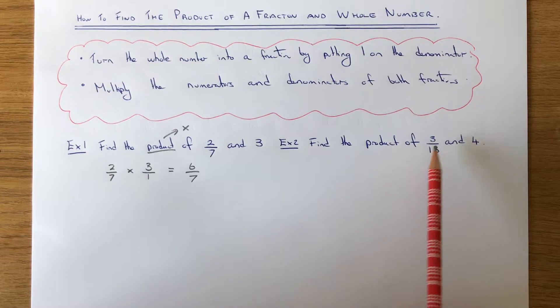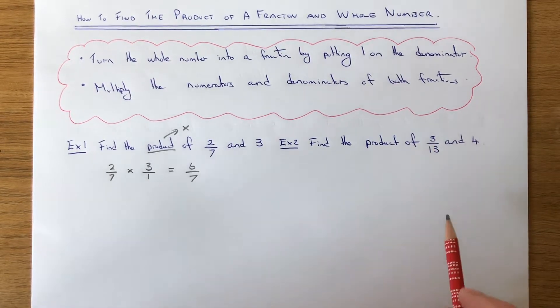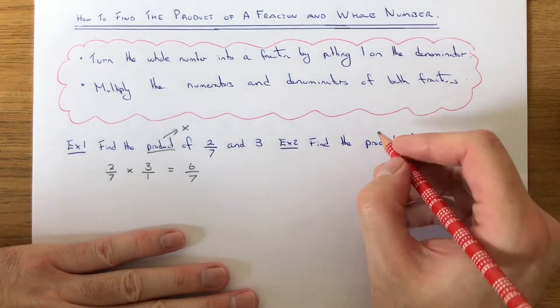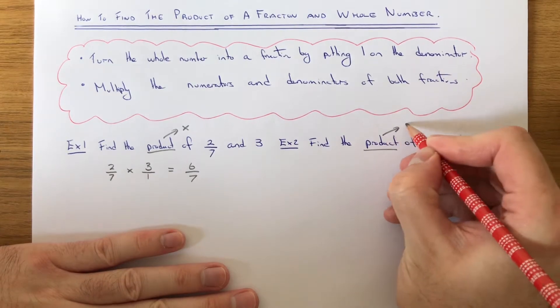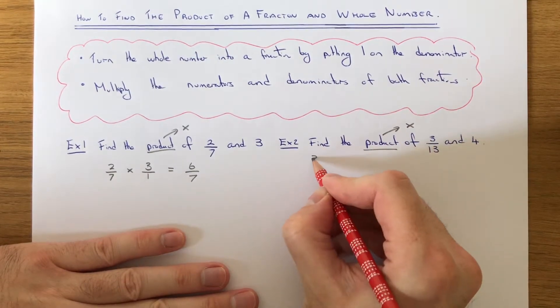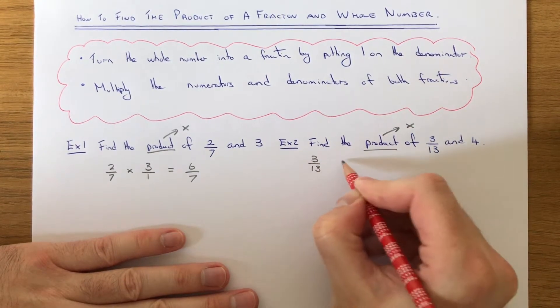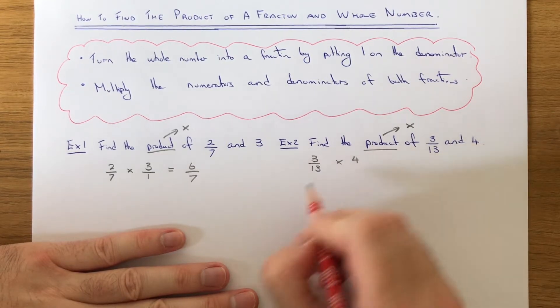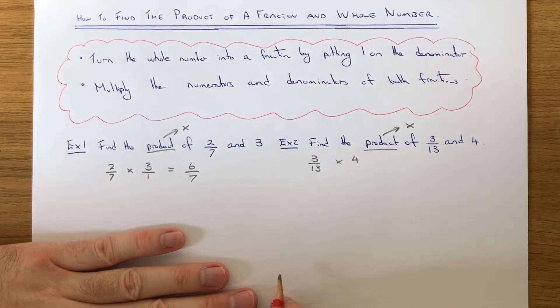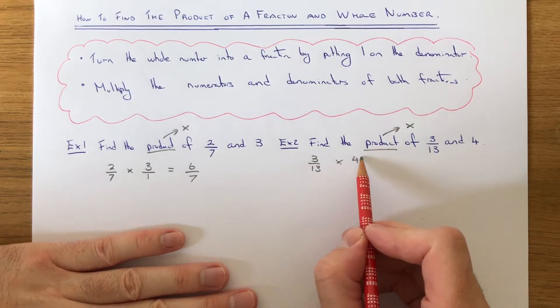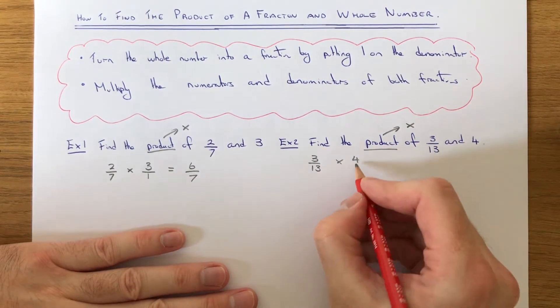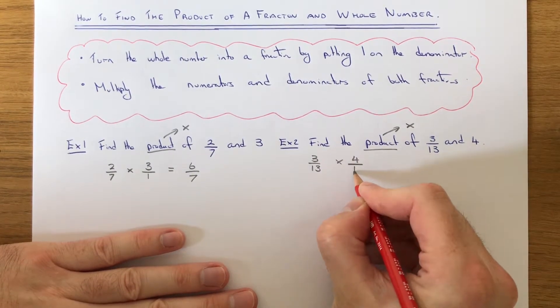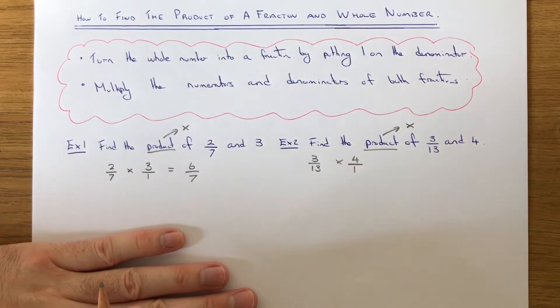We've now got to find the product of 3/13 and 4. Again, product means we need to multiply the fractions together. 3/13 times 4 is what we need to work out. Again, we can change this whole number into a fraction by putting 1 on the denominator of the fraction.